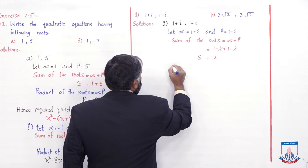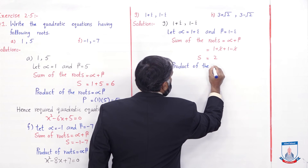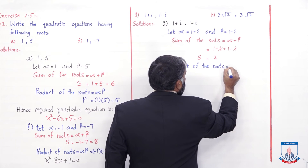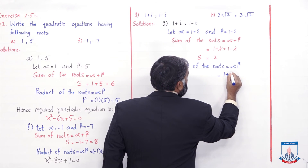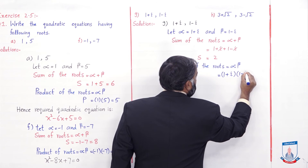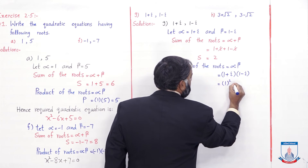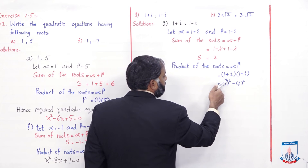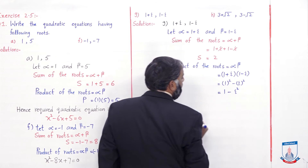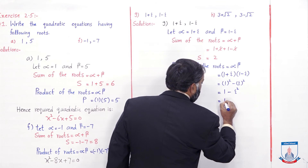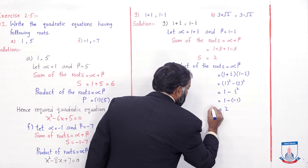Now find the product of the roots: alpha × beta = (1 + i)(1 - i). Apply the formula (a + b)(a - b) = a² - b²: here a = 1, b = i, so 1² - i² = 1 - i². Now i² = -1, so 1 - (-1) = 1 + 1 = 2. So the product of roots is also 2.